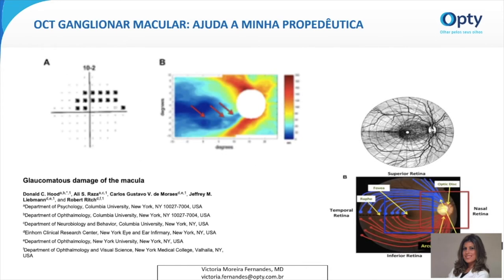No artigo 'Dano Glaucomatoso da Mácula', os autores apontam a característica de danos em padrão arqueado típico do glaucoma, que normalmente estão associados ao afinamento local da camada de fibras nervosas em uma região pequena do disco óptico denominada zona de vulnerabilidade macular. É demonstrado um modelo esquemático mostrando que o dano macular, principalmente da região inferior, acaba se projetando na zona de vulnerabilidade macular, principalmente na região inferior do disco, com ênfase na região temporal inferior. Mostra que defeitos inferiores tendem a afetar mais a mácula que defeitos superiores.